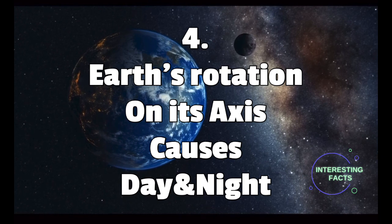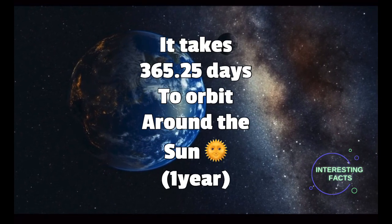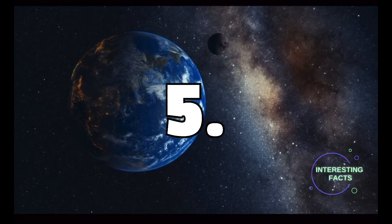Number four, Earth's rotation on its axis causes day and night. It takes 365 days to orbit around the sun, which is one year.